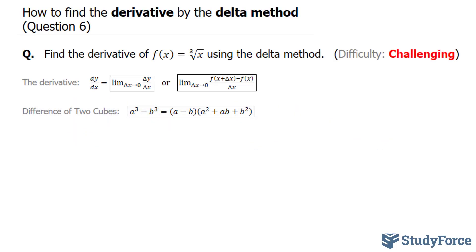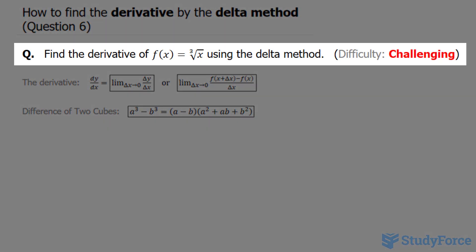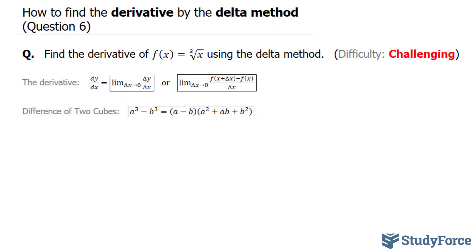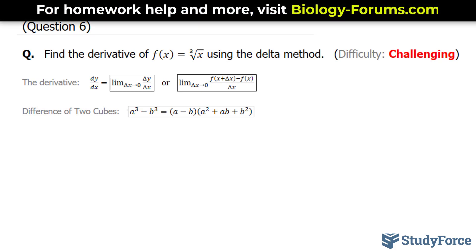In this lesson, I'll show you how to find the derivative by the delta method. This is question 6. The question reads, find the derivative of f of x equals the cube root of x using the delta method. Notice that I've given this question a difficulty rating of challenging, which suggests that it's not as straightforward as the previous questions we've done in this series. That being said, let's go ahead and set this up.